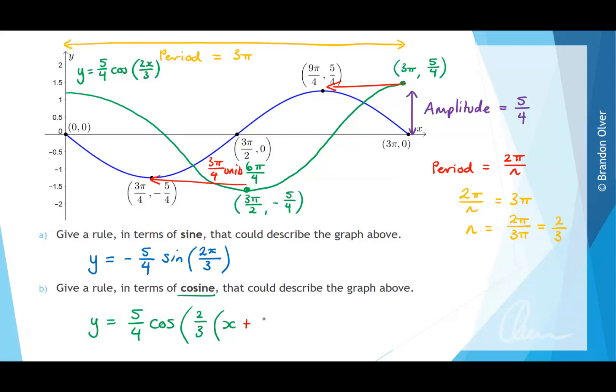And then we want to translate this graph in the negative x direction. So we're going to add on the 3 pi on 4 that we found previously. And then this is the rule for a cosine graph that would describe the graph above.